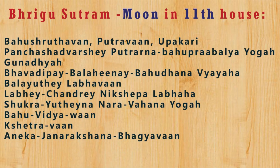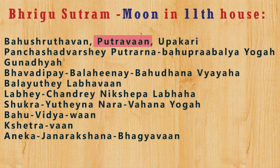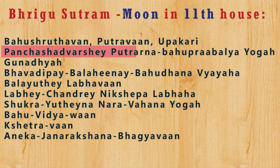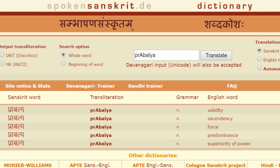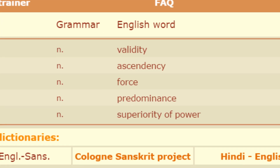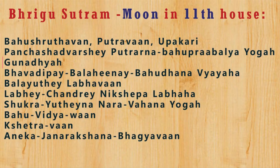Let's go back to Bhrigu Sutram. Sage Bhrigu says 'Bahu Shrutavan' — Dr. G.S. Kapoor translates this as the native will be highly learned. 'Putravan' — will have sons, also meaning good children. 'Upakari' — and will be helpful to others. At the age of 50 he will be father of many sons. Maybe Sage Bhrigu meant to say that the person will have quite a large family with sons and grandsons. And along with 'Bahu Prabalya Yogaha', 'Gunadaya' — he will also possess praiseworthy qualities.